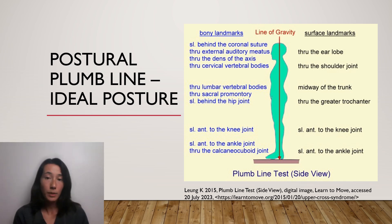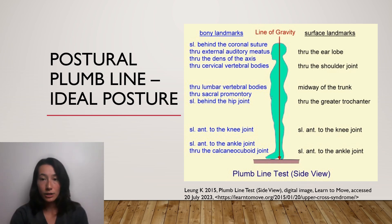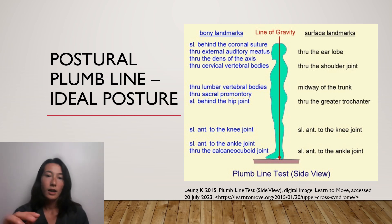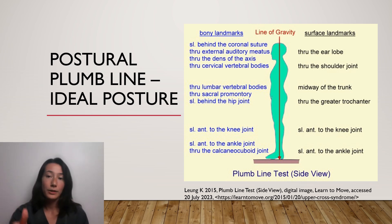There are certain landmarks that need to line up on that plumb line in order to have an ideal posture. Any of these landmarks seen either anterior or posterior to that plumb line will be considered a deviation. These landmarks are the external auditory meatus, the acromioclavicular joint, sacrum/posterior, greater trochanter, tibiofemoral joint, and calcaneocuboid joint. Additional structures also need to be aligned with the plumb line, including the dens of the axis and the coronal suture of the skull.